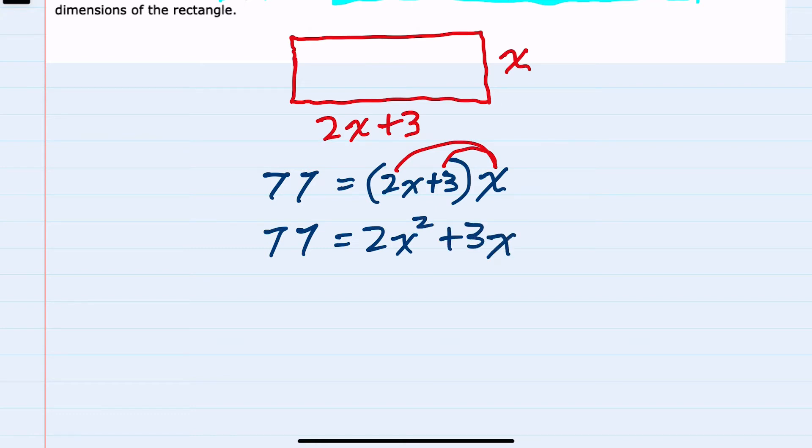And then to solve, since this is a quadratic, I would want to set it equal to 0. And I can do that by subtracting the 77 over to the other side. Canceling it on the left gives me 0 equals. On the right hand side, we now have 2x squared plus 3x minus 77.